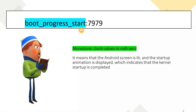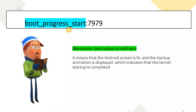Next is `boot_progress_start`. Boot-related events can also be seen in event logs. Whenever the Android device starts booting, we see `boot_progress_start`. The value — for example 7979 — is a monotonic clock value in milliseconds, indicating that the Android screen is lit and the startup animation is displayed, which means kernel startup is completed. This is the logo screen you see when you reboot your device.